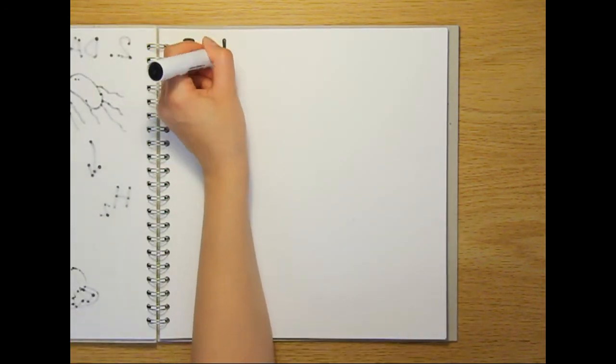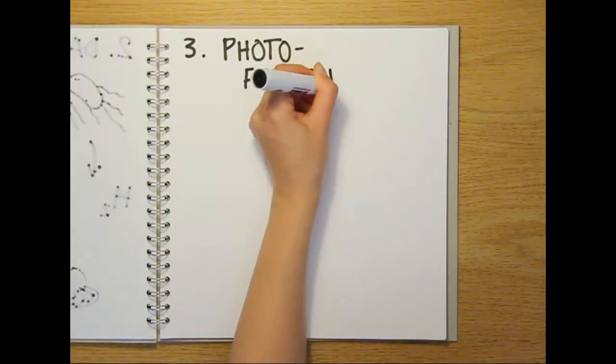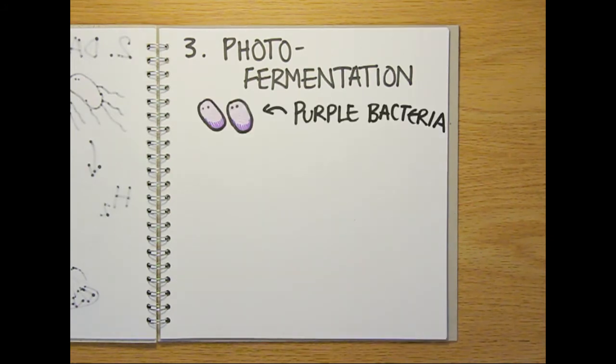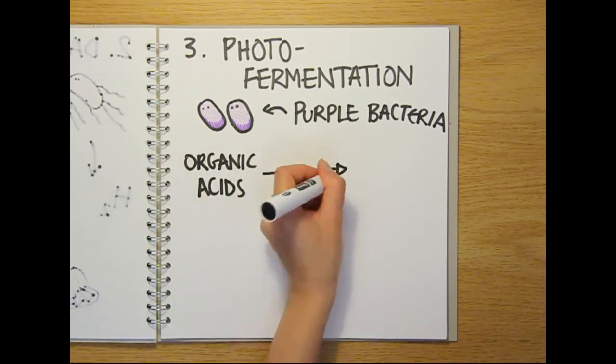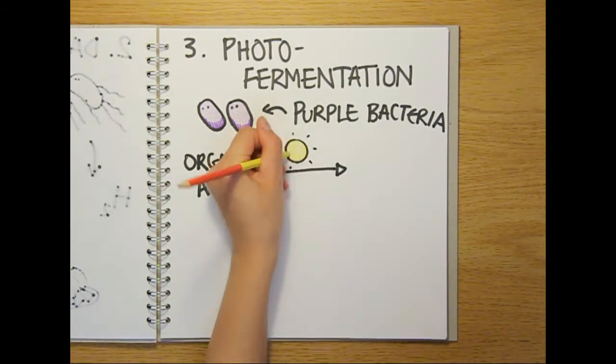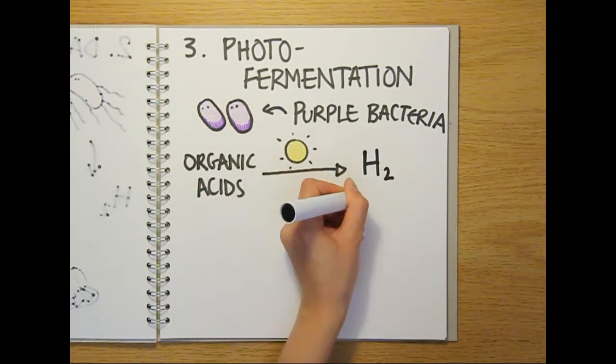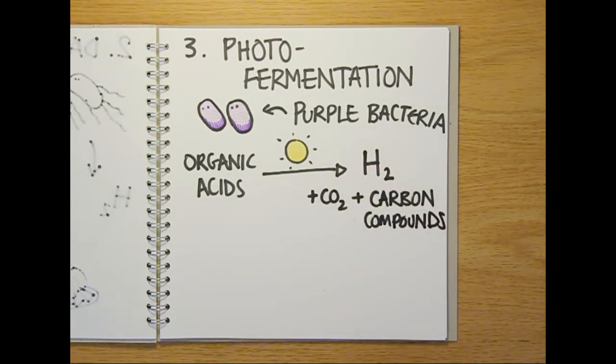Photo fermentation is the third and perhaps most efficient method of hydrogen production. It uses purple bacteria that are known as photoheterotrophs because they use the energy in sunlight to break down organic acids to form hydrogen, a small amount of CO2 and the carbon compounds that they need to grow.